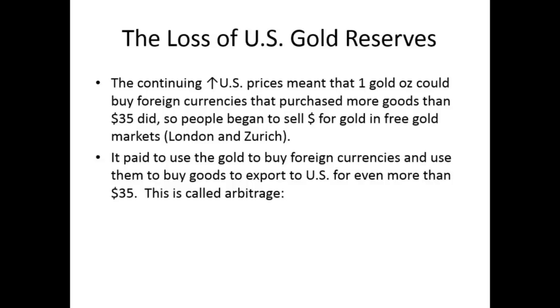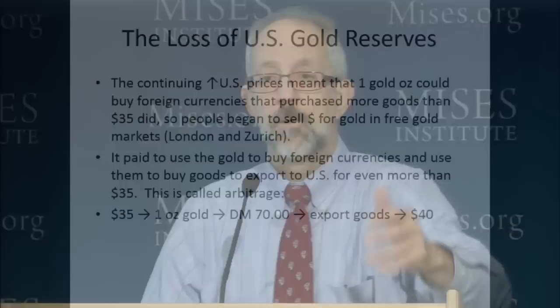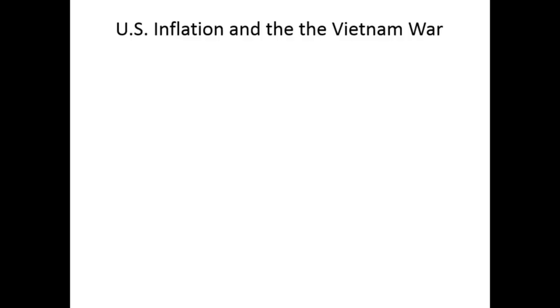It paid to buy foreign currencies and use them to buy gold — something called arbitrage. If you had $35, you'd go to these foreign free gold markets, get 70 German marks at the two-marks-to-one-dollar exchange rate. Since there was no inflation in Germany, you could buy more goods there with 70 Deutschmarks than you could buy in the U.S. with $35. You'd take the 70 German marks, buy goods in Germany, export them to the U.S. where you could get $40 for them — turning $35 into $40. The U.S. had to continually sell gold because everyone was selling dollars to get gold in these free markets.